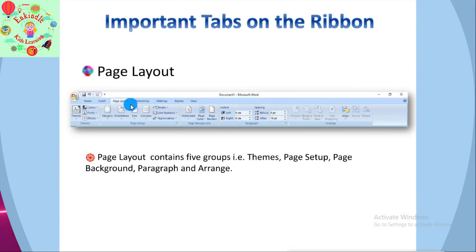Then comes the Page Layout tab. It is the third tab in the ribbon. This tab allows you to control the look and feel of your document — you can change the page size, margins, line spacing, indentation, and orientation. The Page Layout tab has five groups of related commands: Themes, Page Setup, Page Background, Paragraph, and Arrange.